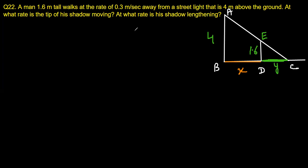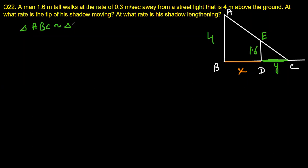We will find the relation between x and y using similarity of triangles. Triangle ABC is similar to triangle EDC. We can see one angle is 90° in each, and another angle is common to both triangles, confirming they are similar.